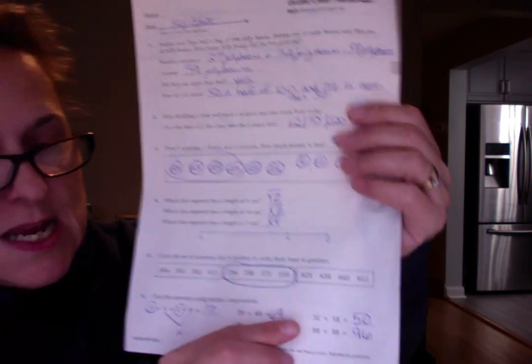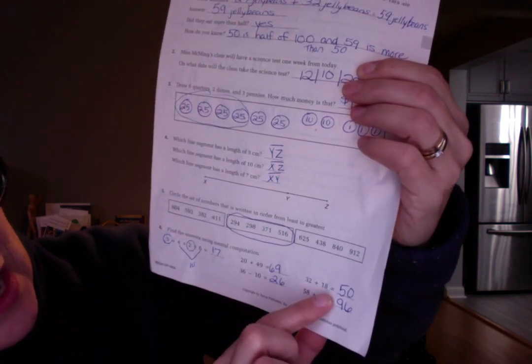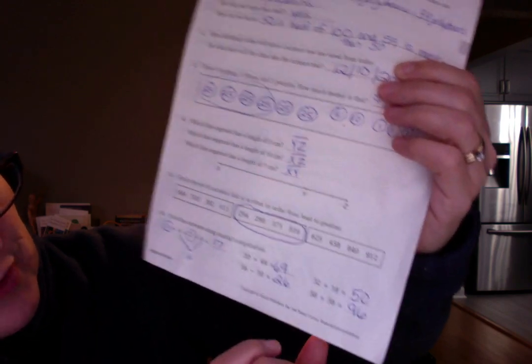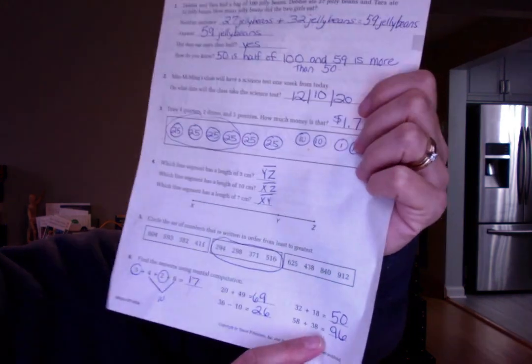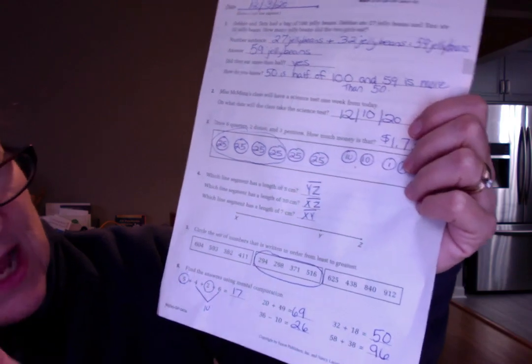Thirty two plus eighteen is fifty, right? Thirty and ten is forty and two and eight make ten. So forty plus ten is fifty. And fifty eight plus thirty eight. Fifty and thirty make eighty and eight and eight make sixteen. So eighty plus sixteen is ninety six.